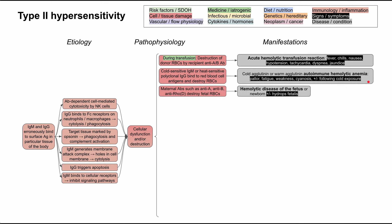Hemolytic disease of the fetus, sometimes called hemolytic disease of the newborn, involves maternal antibodies such as anti-A, anti-B, and anti-Rho, also called anti-D. These destroy the fetal red blood cells. Sometimes there is mixing of maternal and fetal blood that predisposes to this condition. The presentation can include anemia signs in a newborn, and you might even have hydrops fetalis, which is a very unfortunate outcome.